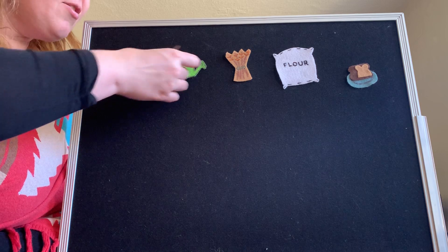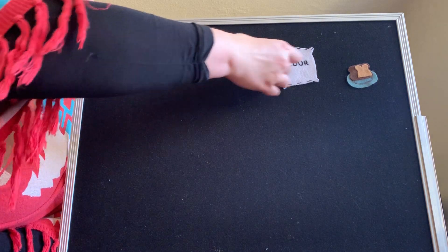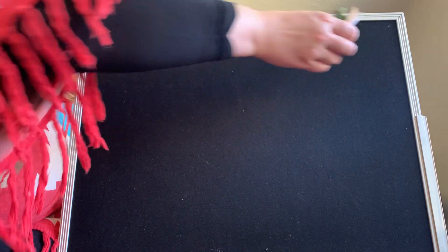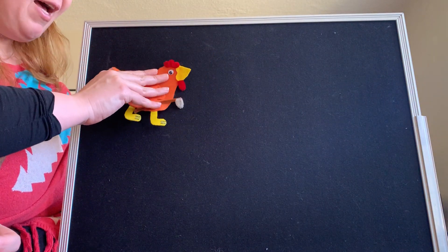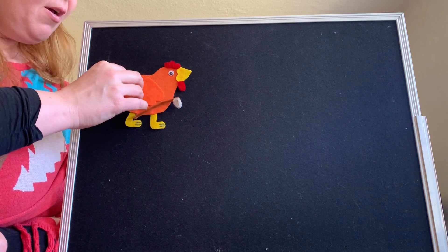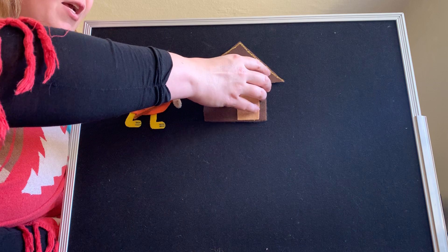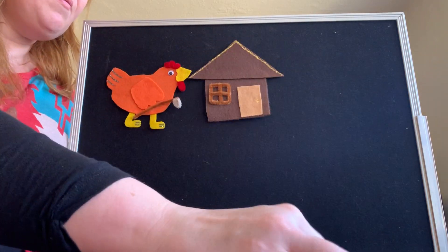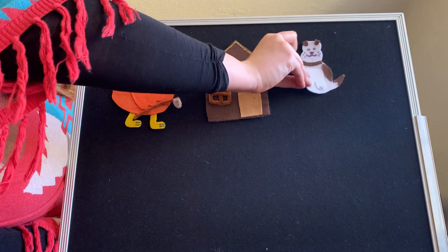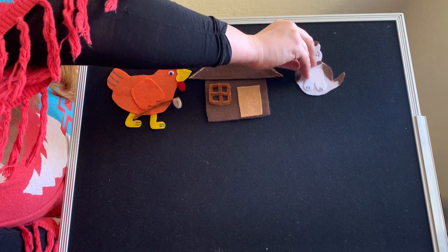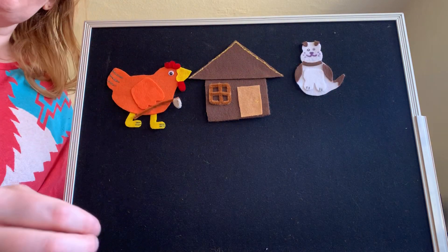We have everything to start our story. Let's bring out our main character. Once upon a time, there lived a very industrious, hard-working little red hen. She lived in a cute little cottage with three of her friends. There was the dog, who liked to sleep all day out on the front porch.